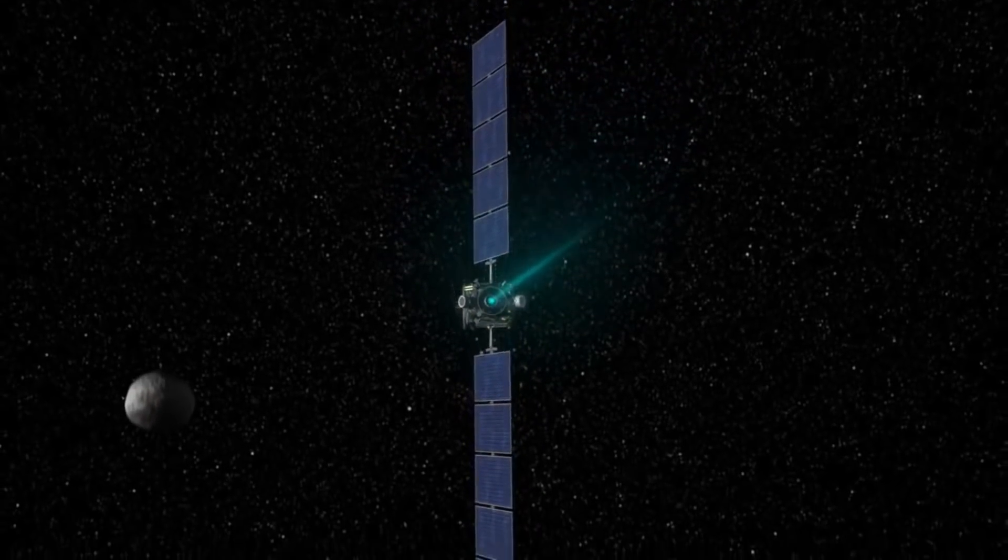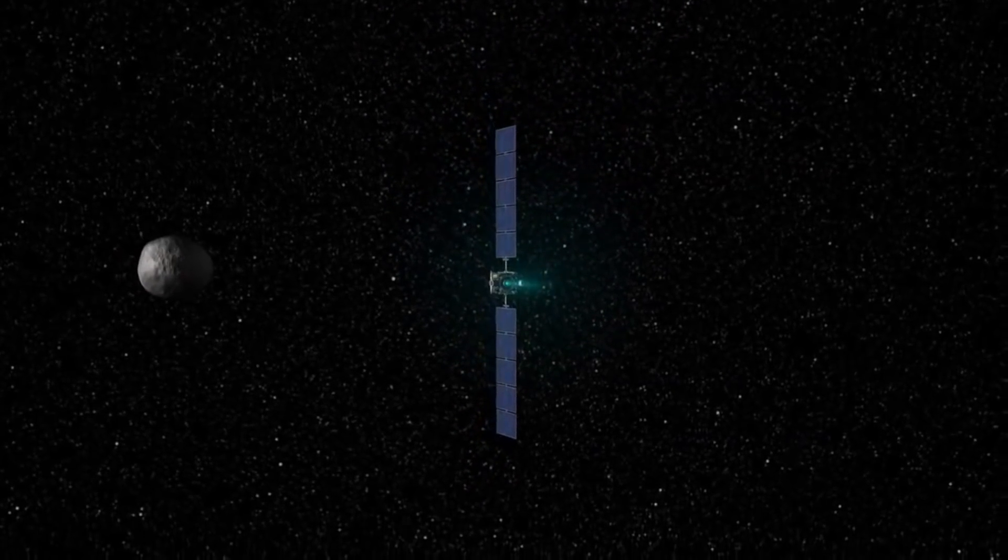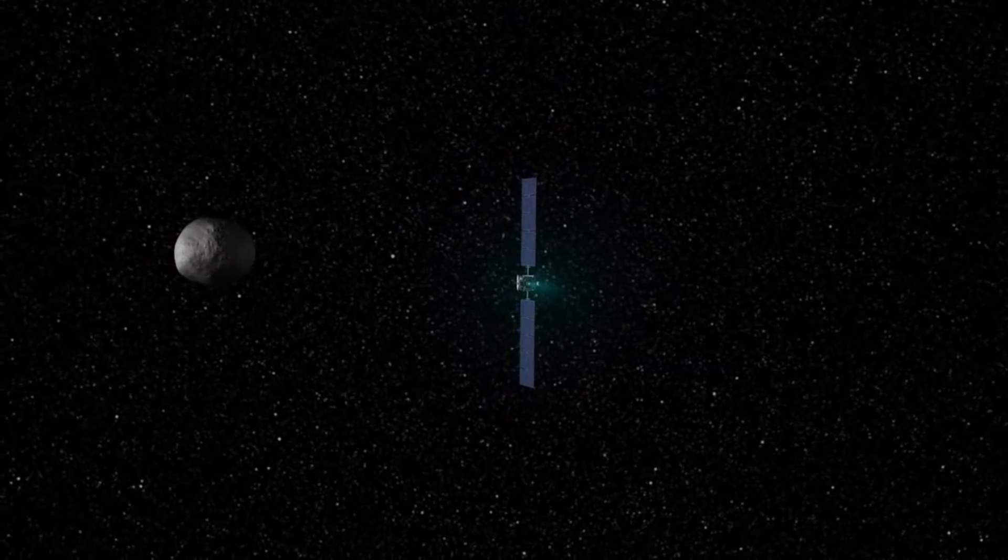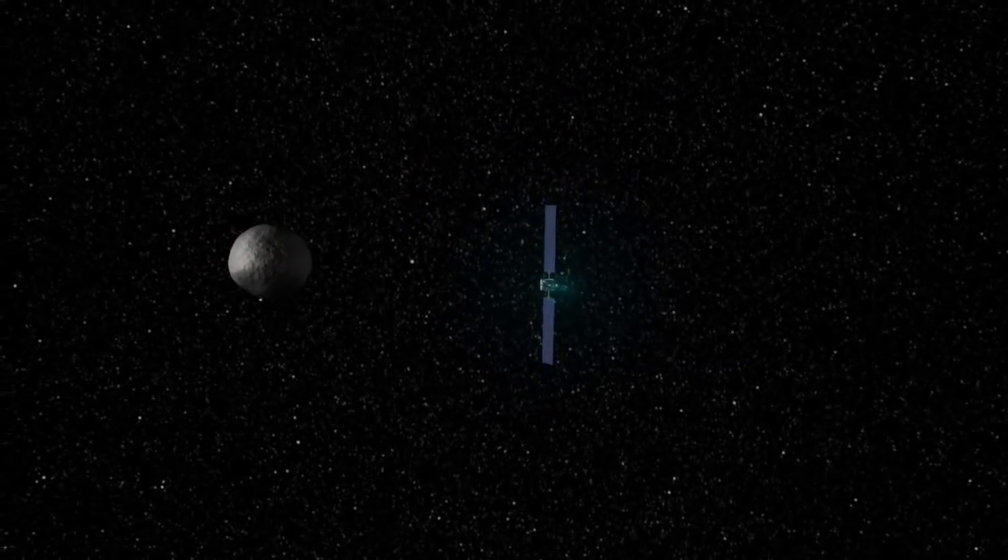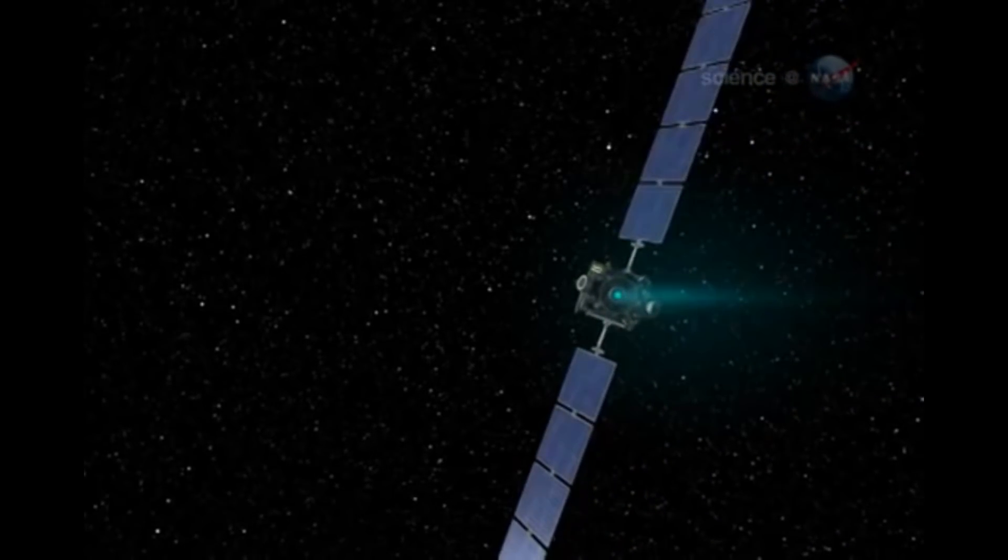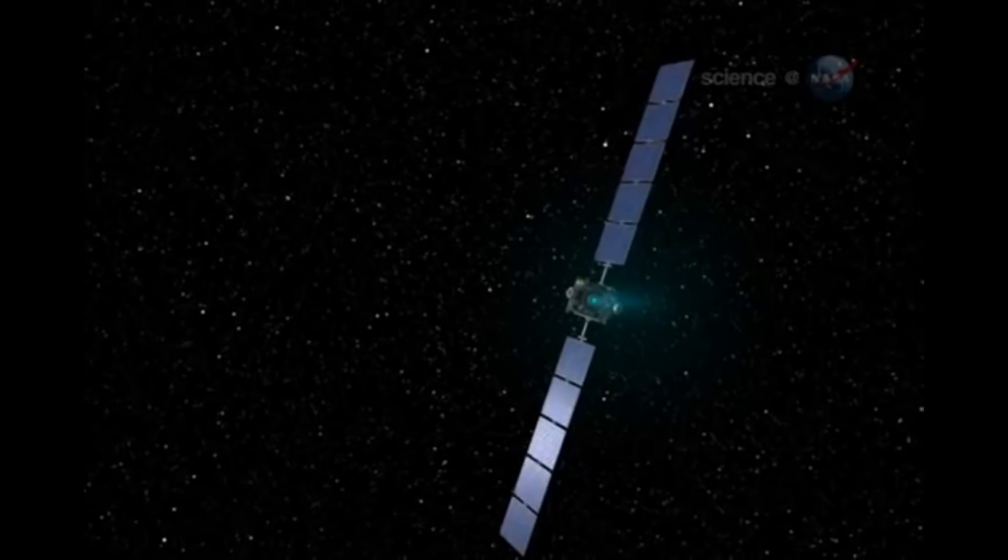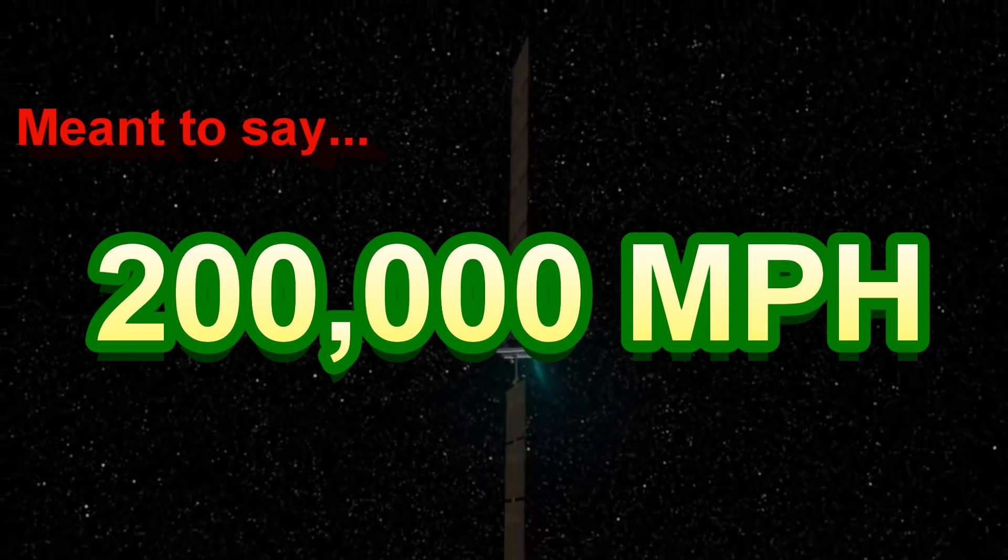The ion thruster of the Dawn spacecraft, for instance, at full throttle would take 4 days to accelerate from 0 to 60 miles per hour. But in the zero gravity, frictionless environment of space, the ion thruster can reach much faster speeds than chemical propulsion systems. Spacecraft powered by ion thrusters can reach speeds over 200,000 miles per hour.